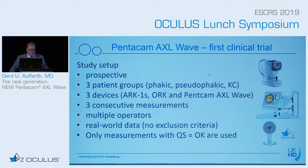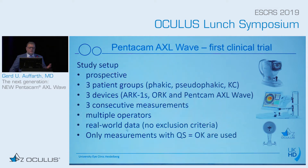In the first study, the first clinical trial, we compared three patient groups: phakic, pseudophakic patients, and those with keratoconus, with three devices — the NIDEK, the Schwind, and the Oculus device. Three consecutive measurements were done. We looked at the quality of the data and the standard deviations. We had real-world data, not heavily selected. Measurements were only used when the internal system of the machine confirmed they were of good quality.